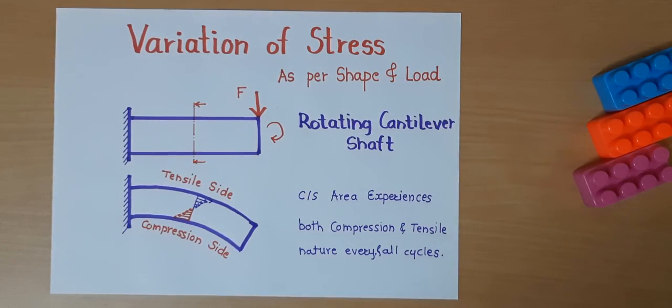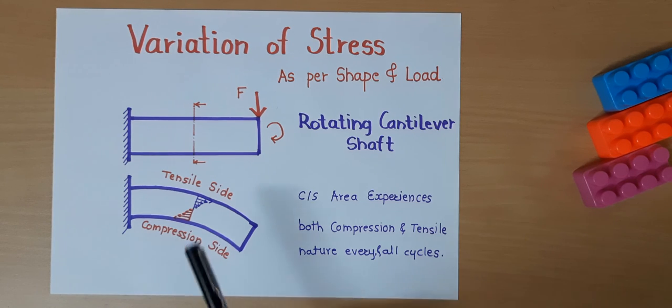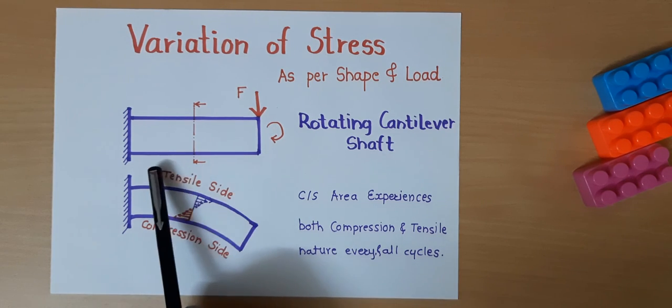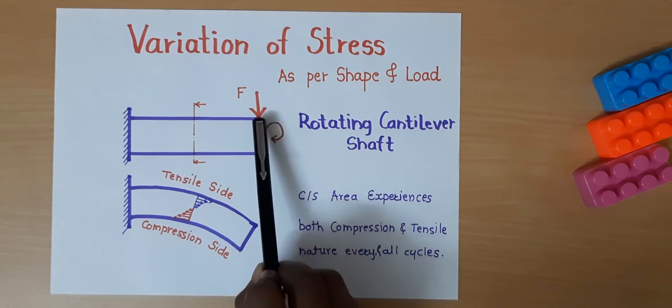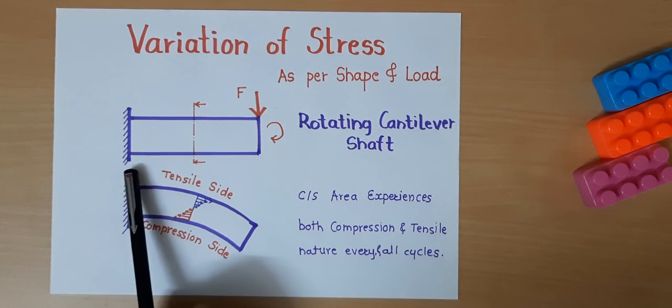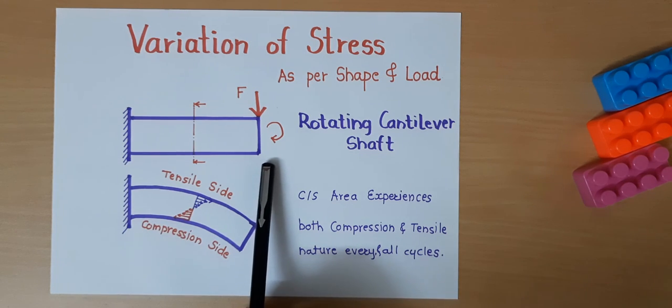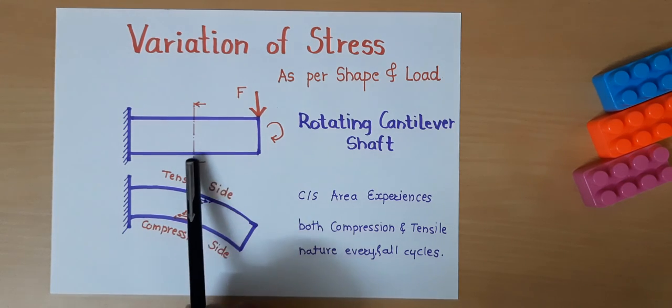We have seen the simple example of a square rod. But when we come to complex examples, this variation behaves very differently. Like, let's take one example of a rotating shaft. It is rotating clockwise and force is applied on it, behaving as a cantilever. Now, if you take the cross section at the middle, what will happen?